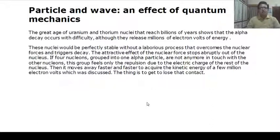The great age of uranium and thorium nuclei that reach billions of years shows that the alpha decay occurs with difficulty, although they release millions of electron volts of energy. These nuclei would be perfectly stable without a laborious process that overcomes the nuclear forces and triggers decay. The attractive effect of the nuclear force stops abruptly outside the nucleus.